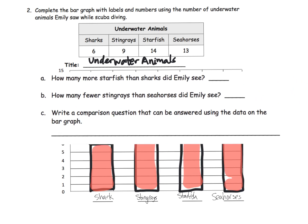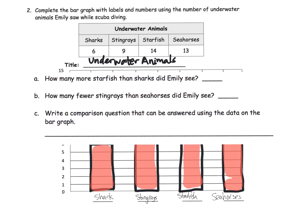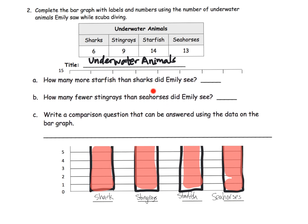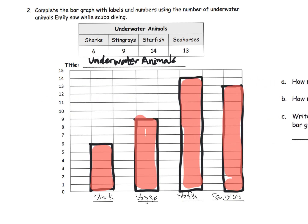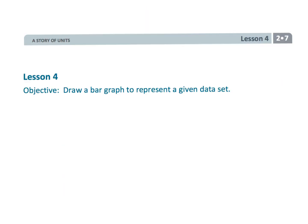So now we have these questions that we can answer. How many more starfish than sharks did Emily see? How many fewer stingrays? And once again, it's an opportunity to practice those important mathematical vocabulary words. Most importantly, let students talk about how they got the answer more than just what the answer is. And that wraps up second grade module 7 lesson 4 — students are drawing bar graphs for data and then answering questions.